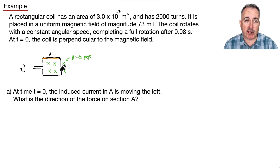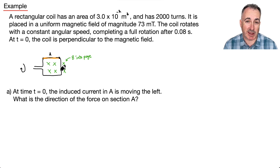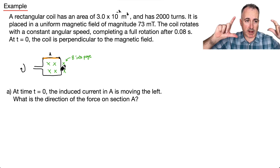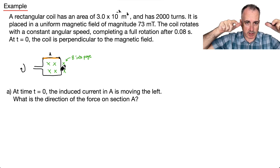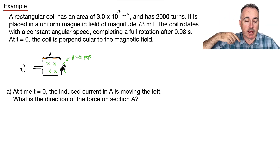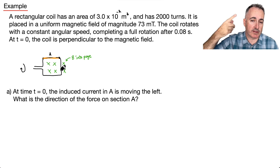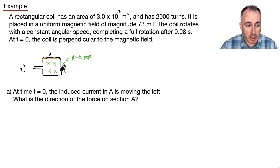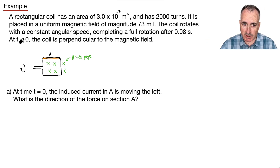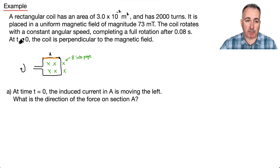It's placed in a uniform magnetic field of magnitude 73 milliteslas. This coil rotates with a constant angular speed — the whole thing is spinning — and it completes a full rotation after 0.08 seconds. We're told that at time t equals 0, the coil is perpendicular to the magnetic field.